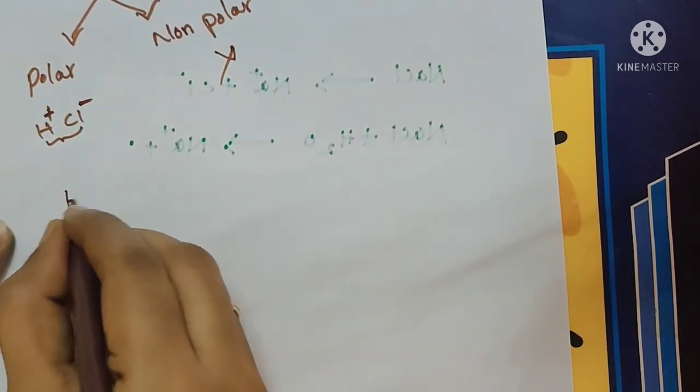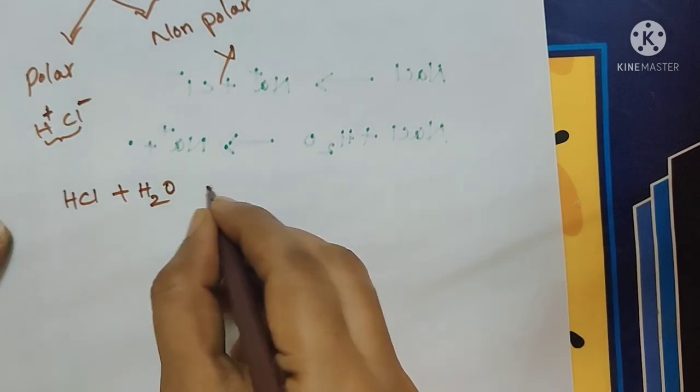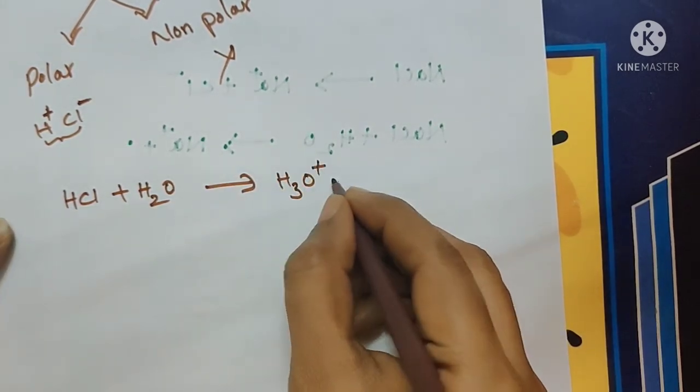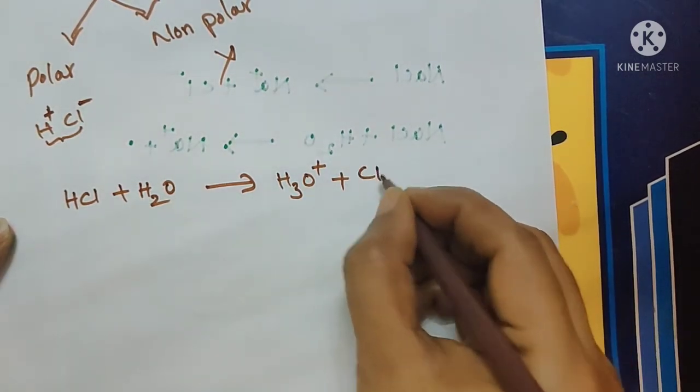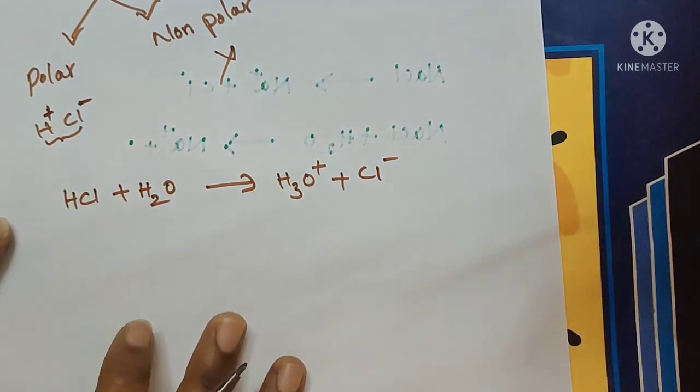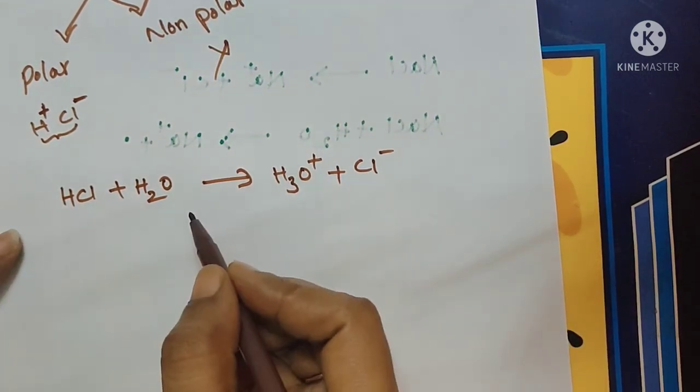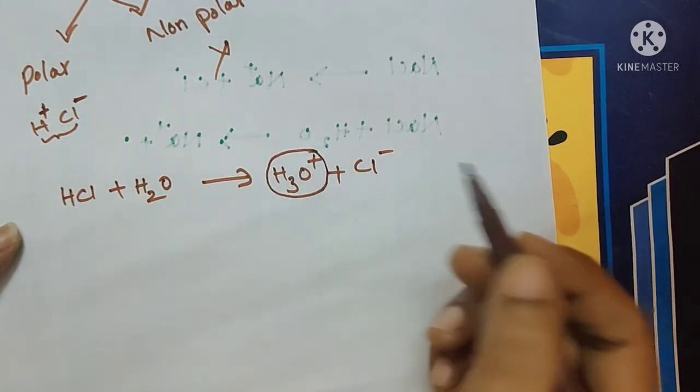HCl plus H2O gives H3O plus plus Cl minus ions. What is happening here? These are the new ions.